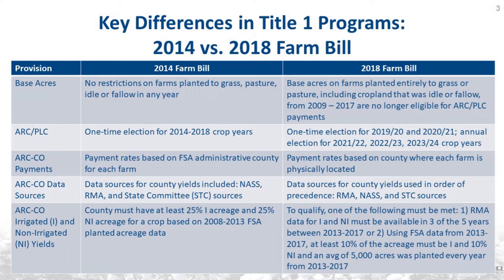Several changes were made to the ARC County program in the 2018 Farm Bill. Payment rates will now be based on the county where each farm is physically located, as compared to the FSA administrative county for each farm in the 2014 Farm Bill. For ARC County data sources, FSA will use RMA data when available, followed by NASS data, and then data from state committee sources. The criteria for calculating separate ARC County irrigated and non-irrigated yields was revised; the county will qualify if RMA irrigated and non-irrigated yield data is available in three of the five years between 2013 and 2017, or using FSA data from 2013 to 2017, at least 10% of the acreage was irrigated and 10% was non-irrigated, and an average of 5,000 acres was planted in every year from 2013 to 2017.